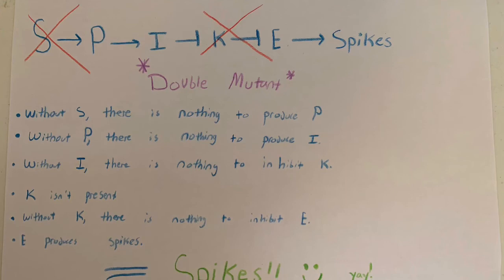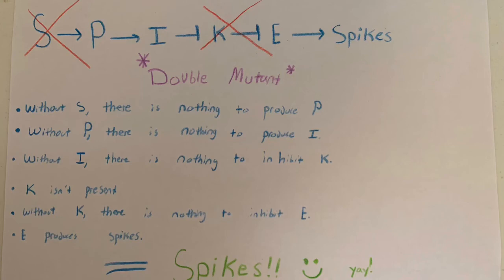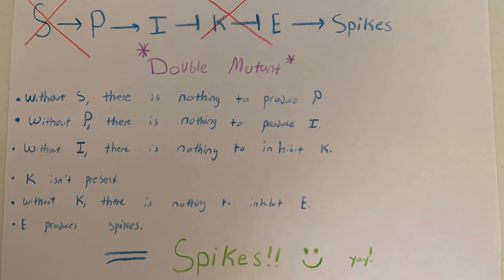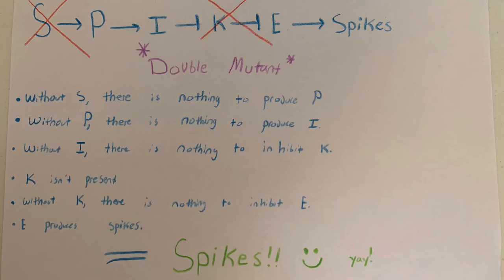Our fourth mutant is an S-K-, another double mutant. Without S, there is nothing to produce P. Without P, there's nothing to produce I. Without I, there is nothing to inhibit K. K already isn't present, and without K, there is nothing to inhibit E. So E will produce spikes. This is the only mutant out of the four where spikes are produced.